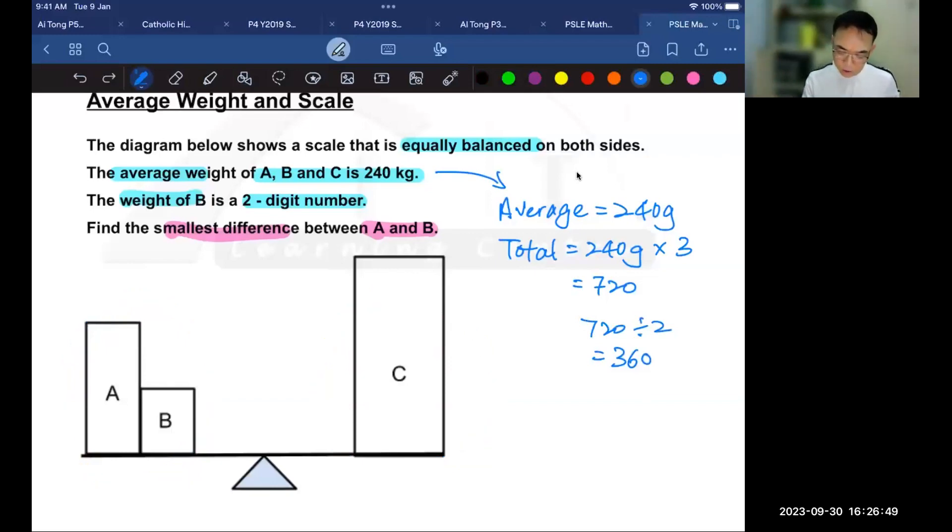So with this, I now know the weight of A and B. Next, they say that B is a two-digit number, and they want the difference to be as small as possible. In order for the difference to be as small as possible,